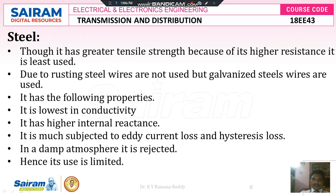Next, steel. Though it has greater tensile strength and good mechanical strength, steel is least used as a conductor because its resistance per unit length is very high compared to aluminium and copper. It is not used in large proportions as a conductor material; only in small ratios is steel chosen when manufacturing conductors. Due to rusting, normal steel wires are not used, but galvanized steel wires are used instead, as galvanizing protects from rusting. The properties of steel include lowest conductivity compared to aluminium and copper, and higher internal reactance, which contributes to its higher tensile and mechanical strength.